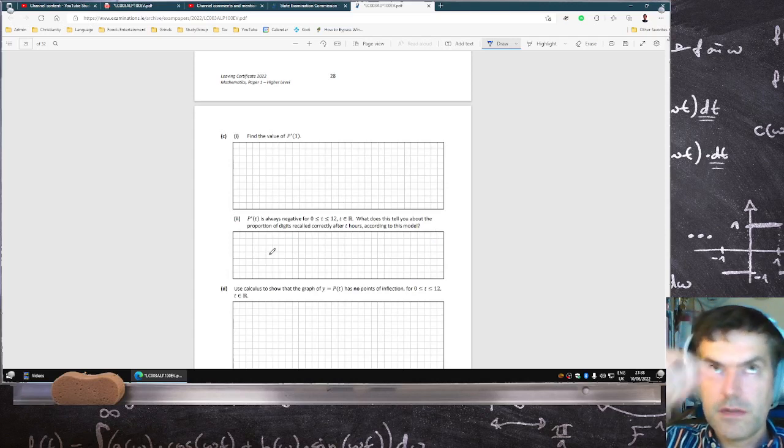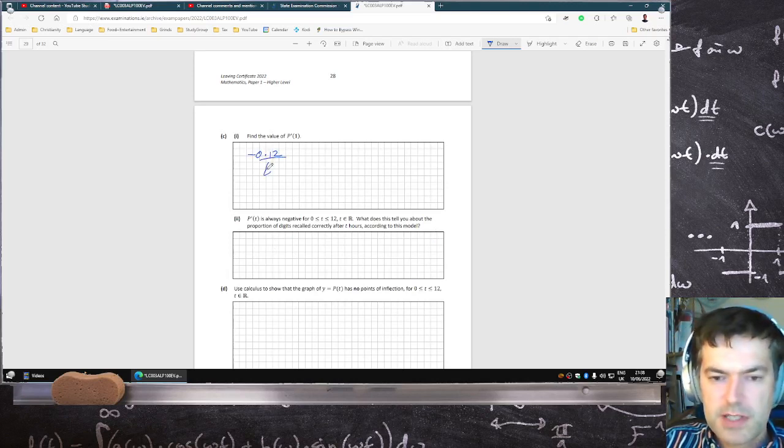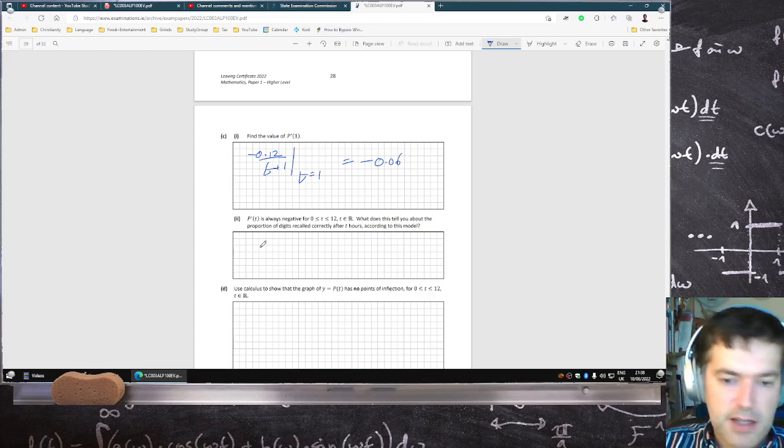What's the derivative? Bring the power down. Derivative of log T plus 1 is 1 over T plus 1. And then you just have to make T equal to 1, so that's minus 0.06. Because it's always negative, it means there's always decreasing, which means you're always losing skill.